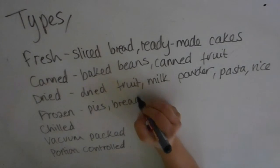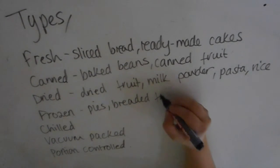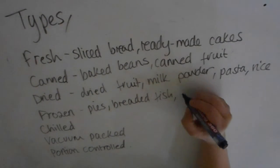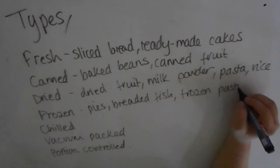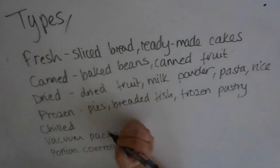You can also get frozen convenience products like pies, breaded fish, and frozen pastry. It's just another way of storing them. Frozen foods can have a really long shelf life and can be defrosted quite quickly, ready for you to use.